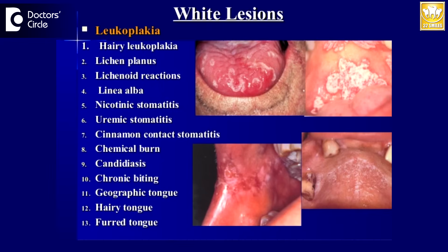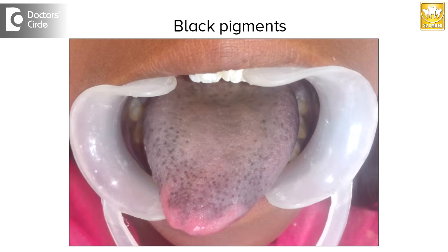The tongue can show up with different varieties of lesions — both red lesions, white lesions, and there will be some black pigments on the tongue. Some of them are normal variations and some could be injurious later.